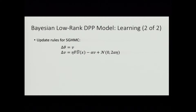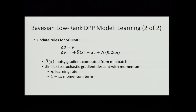Looking at the intuition behind how SGHMC works: if you write out the update equations, they're very similar to stochastic gradient descent, except we're working in a Bayesian setting. Here, u-tilde-x is our noisy gradient, eta is our learning rate, and one-minus-alpha is our momentum term. This is very similar to the update steps for stochastic gradient descent with momentum.